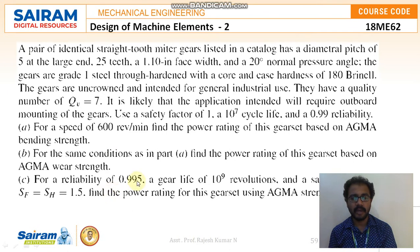And third one is for a reliability of 0.995, a gear life of 10 power 9 revolutions, and a safety factor of 1.5. Find the power rating for this gear set using AGMA strength. If you see this particular problem, even the wordings and the way the output was asked, it is entirely different from the problems we discussed previously. Moreover this particular problem was not asked in the university examination but this question was available in the VTU prescribed textbook that is a foreign author textbook which was authored by Maxwell. So we will see how to solve this particular problem.